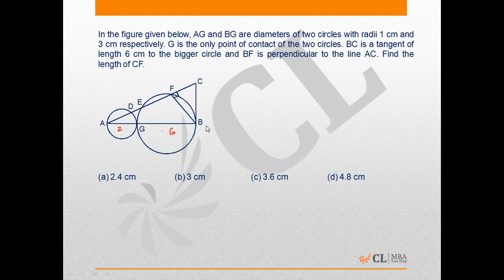G is the only point of contact of the two circles. BC is a tangent of length 6 cm to the bigger circle, and BF is perpendicular to the line AC. We have to find the length of CF.